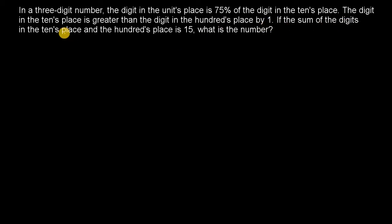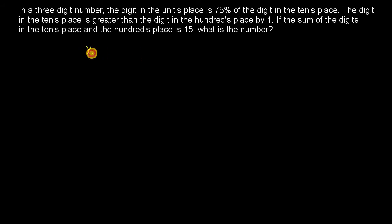And the next condition given is: the sum of the digit in the tens place and the digit in the hundreds place is 15. So we need to find the number. Let us now assume that the digit in the hundreds place is x. And then the digit in the tens place will be x plus 1. Correct?